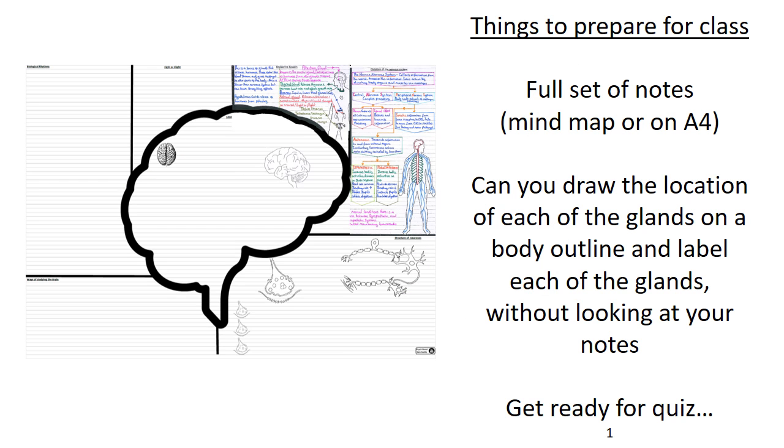Okay, so that's the second section of the mind map complete. To be ready for the class, I want a full set of notes from this. It can either be on the mind map or it can be on your own A4. Once completed, I also want you to be familiar with drawing the outline of a body and generally label up where the different glands appear and the hormone that they release and its effect on the body. So if you can be ready for a quiz when you first come in, that would be great.